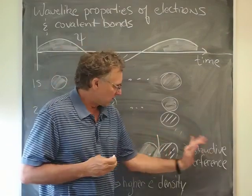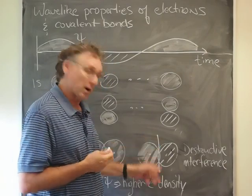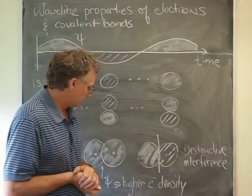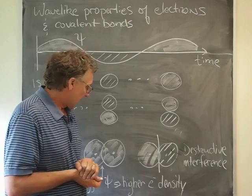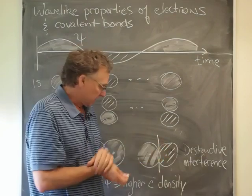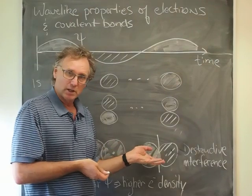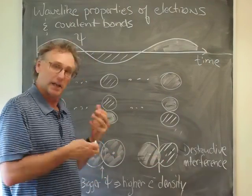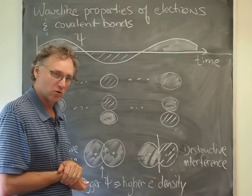That erosion is called destructive interference, and it leads to what we call a node between those two orbitals. These orbitals don't lead to bonding because there's not a buildup of electron density in between them. These orbitals end up getting called anti-bonding orbitals, whereas these end up getting called bonding orbitals.